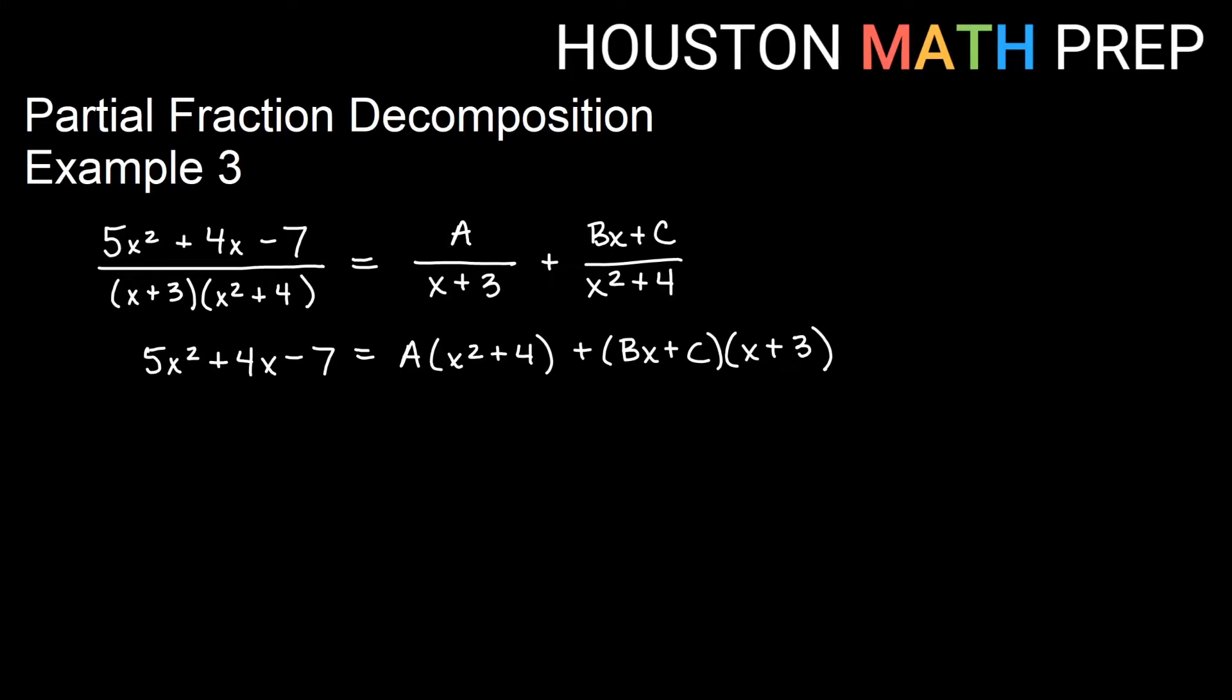You might notice here that we can go ahead and set x equal to negative 3 and that's going to give us some headway, at least, although we won't be able to get all the way through without comparing coefficients. If we let x equal negative 3, so I'll write that x equals negative 3, then that will give us, let's see, we have x squared which would be 9 times 5 which is 45, negative 3 times 4 that'd be negative 12, and then we have minus 7. Negative 3 squared would be 9 plus 4 so we would get A times 13 and of course we did this on purpose to make this entire thing 0 so the rest of that is 0.